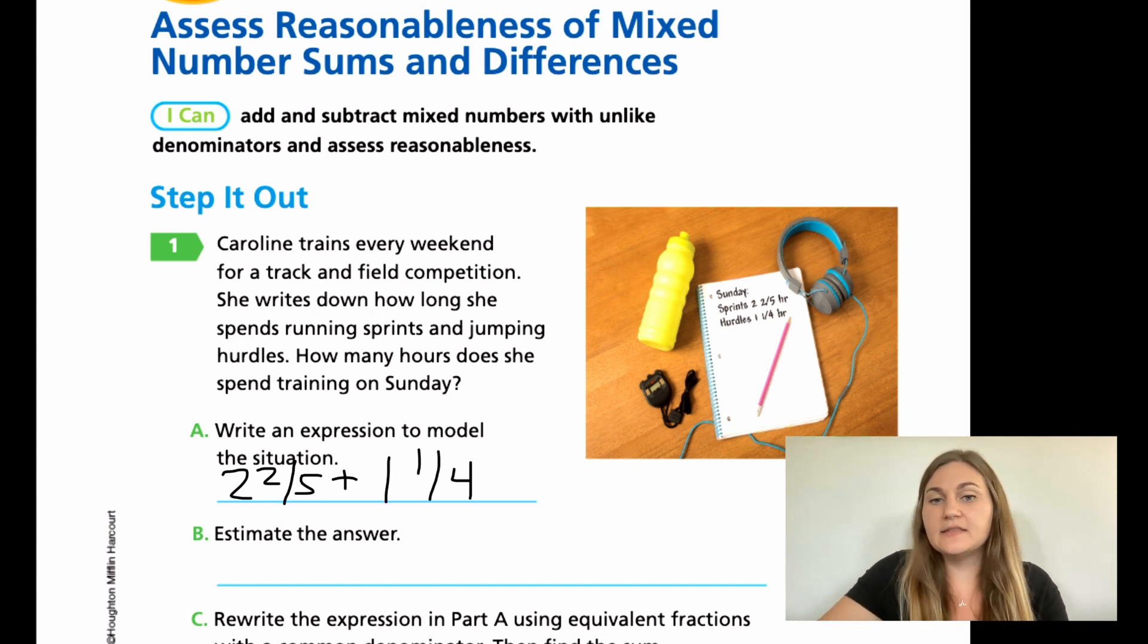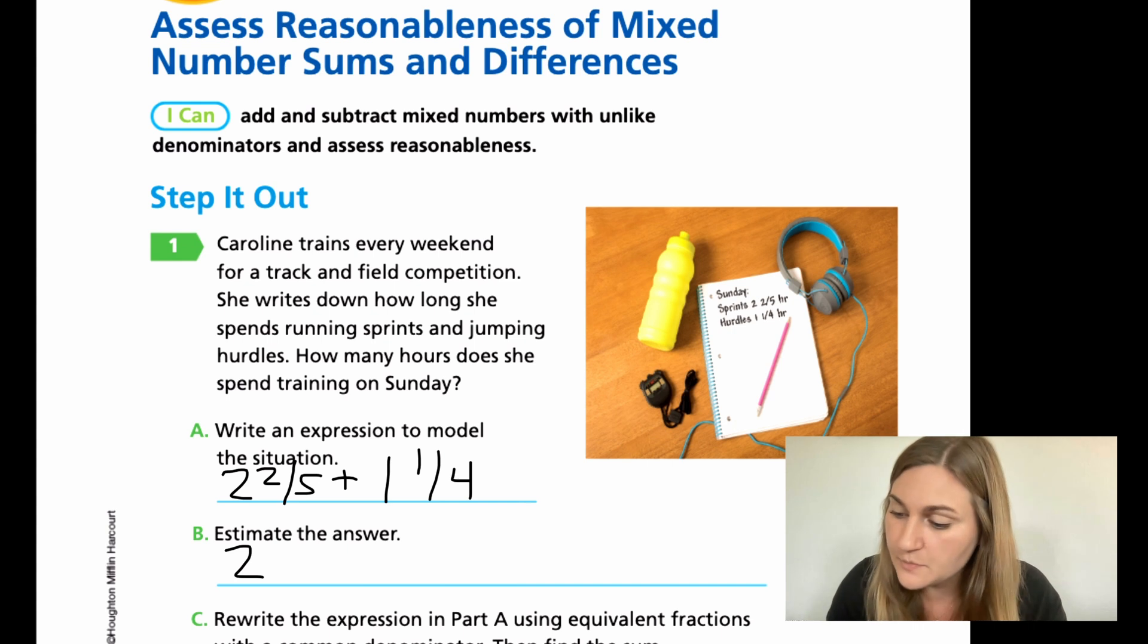Now we want to estimate the answer to see if we can make sure that our final answer is close to whatever we estimate. So I know that my 2 and 2/5, my whole number is going to stay a 2, and my 2/5 is pretty close to my half. Remember what we did with the benchmarks? My 2/5 would be closest to my half benchmark. So that's what I'm going to go to for my estimate.